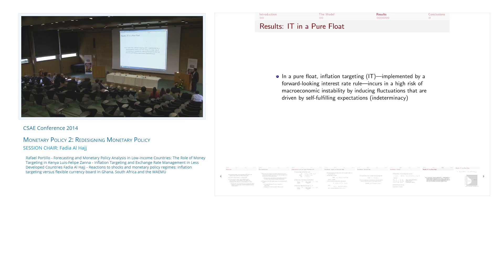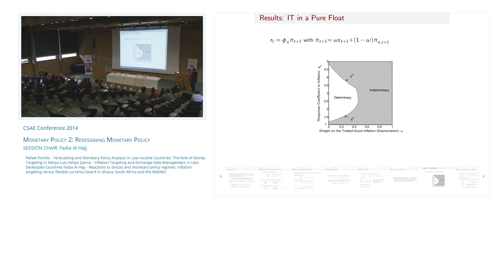Jumping to the results: the first result considers inflation targeting with a forward-looking rule under a pure float, showing this framework incurs a high risk of macroeconomic instability through self-fulfilling expectation fluctuations. I calibrated the model and plot all combinations of the inflation response coefficient and the weight on traded goods inflation, distinguishing regions of determinacy from indeterminacy — that region where we have self-fulfilling fluctuations and macroeconomic instability.